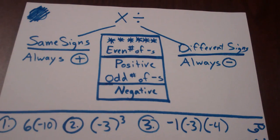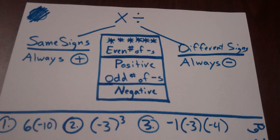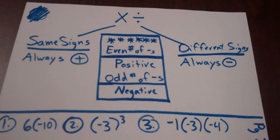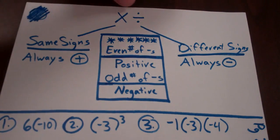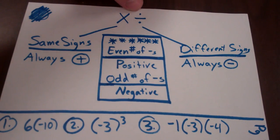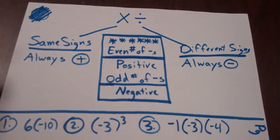I grouped these two lessons together because the rules are the same. Part of the reason the rules are the same is sometimes we do division by doing multiplication — in fractions we multiply by the reciprocal. So we can consider these very similar things even though we talk about them being opposites.